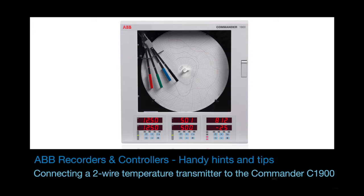Welcome to this short video that explains how to set up a Commander C1900 circular chart recorder to monitor a temperature from a two-wire transmitter using the C1900's internal transmitter power supply.